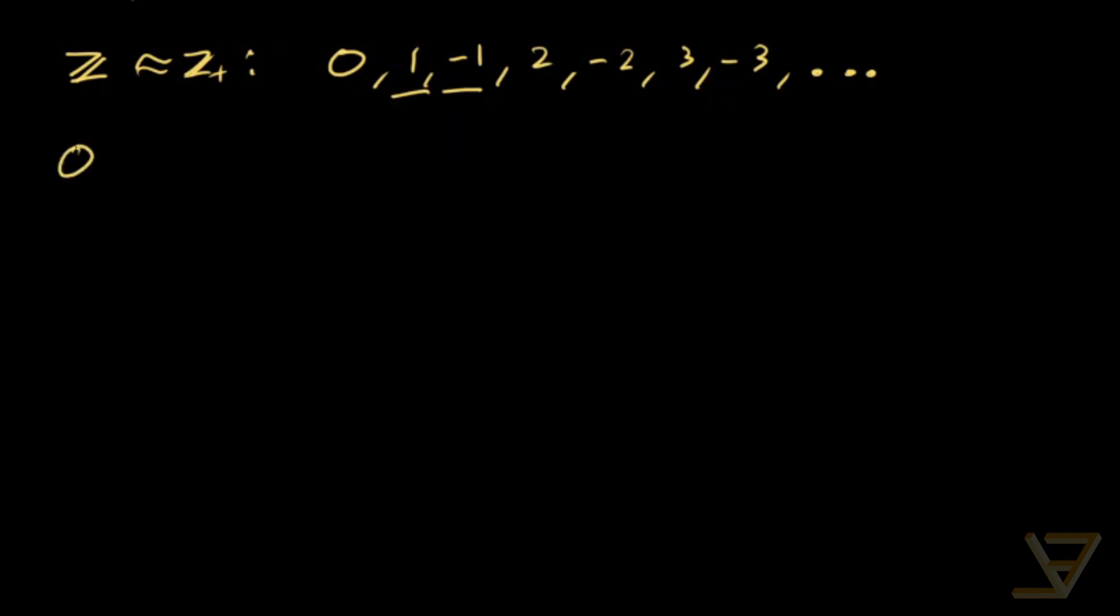So now that we know that the positive rationals are in bijection with the positive integers, there's an enumeration q1, q2, q3, and so on.